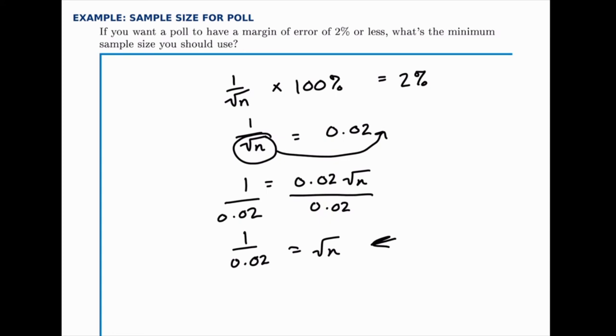Once we get to this point though, we just have one step left, which is that we need to square both sides. Now before I do that, I'm going to simplify 1 divided by 0.02, and that simplifies to 50. But now to get rid of that square root, we just need to square both sides. And the square and the square root will cancel each other. When we square 50, we get 2,500 equals n.